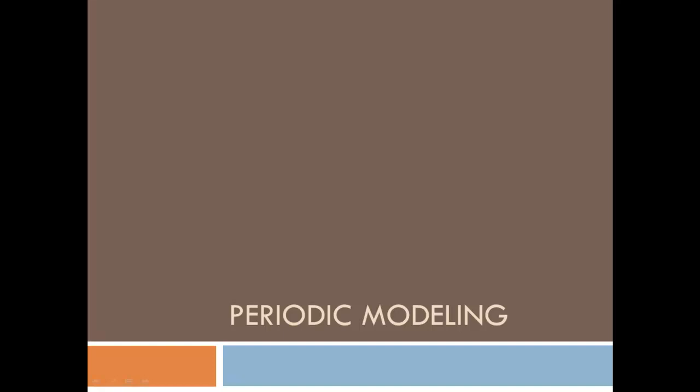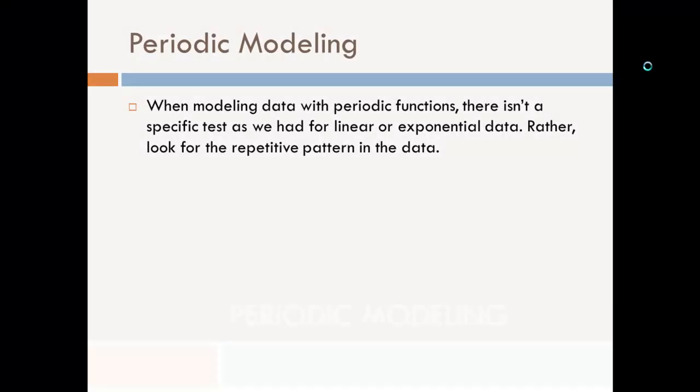In this lesson, we will be modeling data with a periodic function. Whenever we model data with a periodic function, there's no specific test that we use. If you remember, with linear data we tested to see if it had a constant average rate of change. With exponential data, we checked to see if the ratios were constant. Instead, with periodic data, we just look at the data to see if it has a repetitive pattern. Does it oscillate? Does it go up and down between a maximum and a minimum value?